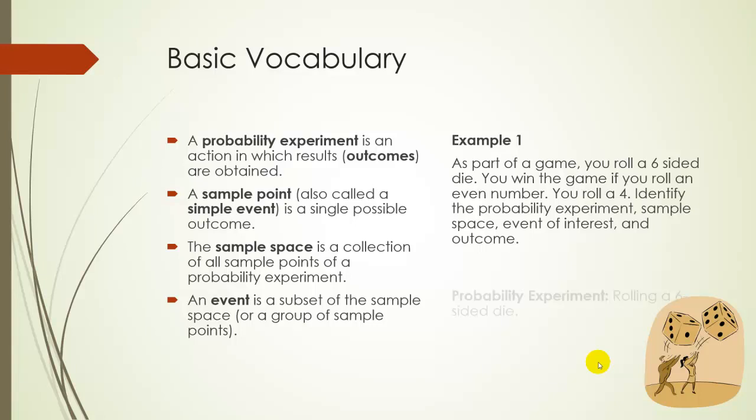The probability experiment is going to be rolling the die. The sample space will be our possible outcomes which is one, two, three, four, five, and six.